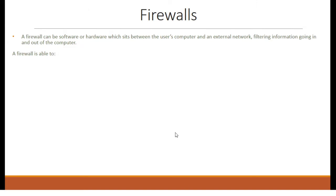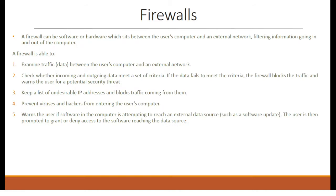Firewall. A firewall can be a software or hardware which sits between the user's computer and an external network, such as the internet, filtering information going in and out of the computer. A firewall is able to examine traffic between the user's computer and an external network, check whether incoming and outgoing data meets a set of criteria. If the data fails to meet the criteria, the firewall blocks the traffic and warns the user for a potential security threat. It keeps a list of undesirable IP addresses and blocks traffic coming from them, and prevents viruses and hackers from entering the user's computer. It also warns the user if software in the computer is attempting to reach an external data source, then prompts the user to grant or deny access.